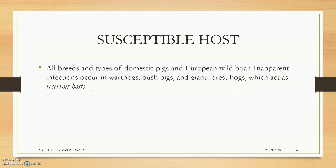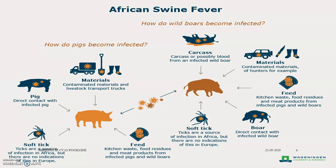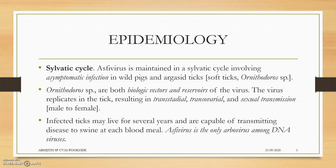Regarding epidemiology, it has got two cycles: the sylvatic cycle and the domestic cycle. In the sylvatic cycle, there is asymptomatic infection in wild pigs — wild pigs carry the infection but do not show any symptoms. The infection is maintained by soft ticks and Argasid ticks, Ornithodoros species.